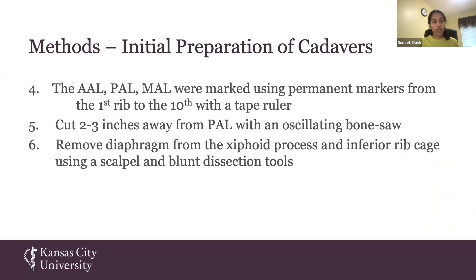After marking the anterior axillary line, posterior axillary line, and midaxillary line from the first to the tenth rib, we cut two to three inches posterior from the posterior axillary line with an oscillating bone saw. We learned the hard way that cutting too close to that posterior axillary line when removing the rib cage would break some ribs because the cadavers were fragile. Finally, we removed the diaphragm from the xiphoid process and inferior rib cage using a scalpel and blunt dissection tools.